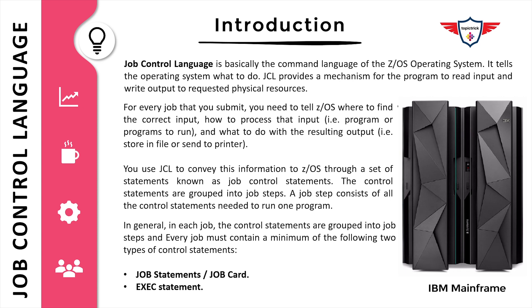You use JCL to convey this information to Z/OS through a set of statements known as job control statements. The job control statements are grouped into job steps. A job step consists of all the job control statements needed to run a program. In general, every job must contain a minimum of two elements: a job card or job statement, and an EXEC statement or execute statement.